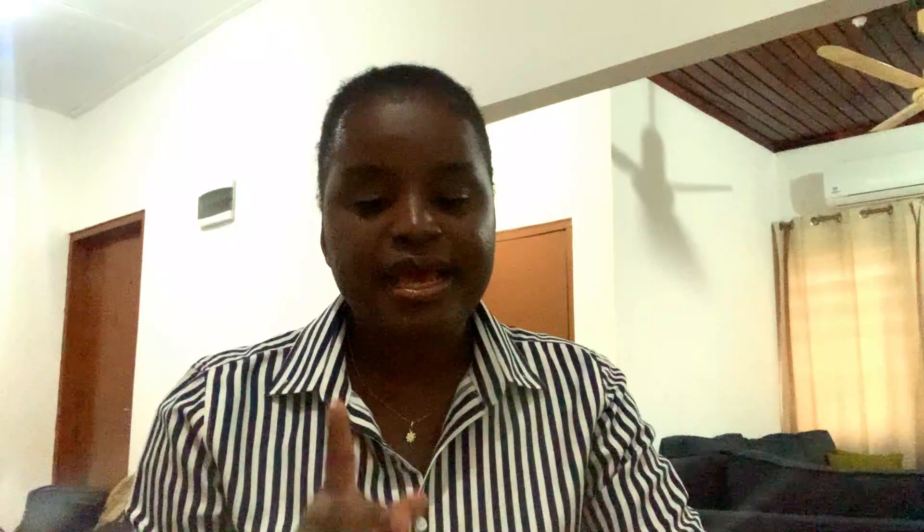Additional BA combinations include: Accounting, Psychology, Adult Education and Human Resource for applicants who do well in mathematics; Public Administration, Sociology and Information Studies; and Human Resource Management, Psychology and Information Studies. In diploma programs, options include: Diploma in Youth and Development, Diploma in Adult Education, Diploma in Public Administration, Diploma in Librarianship, and Diploma in Accounting.